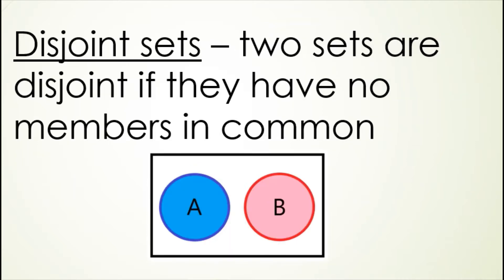Next we have disjoint sets. Two sets are disjoint if they have no members in common — completely the opposite of the previous example. Here, the circle representing set A and the circle representing set B don't touch one another at all, which indicates they don't have any members in common. For example, if A is all apples and B is all oranges, there are no apples that are also oranges, so those two sets are disjoint.